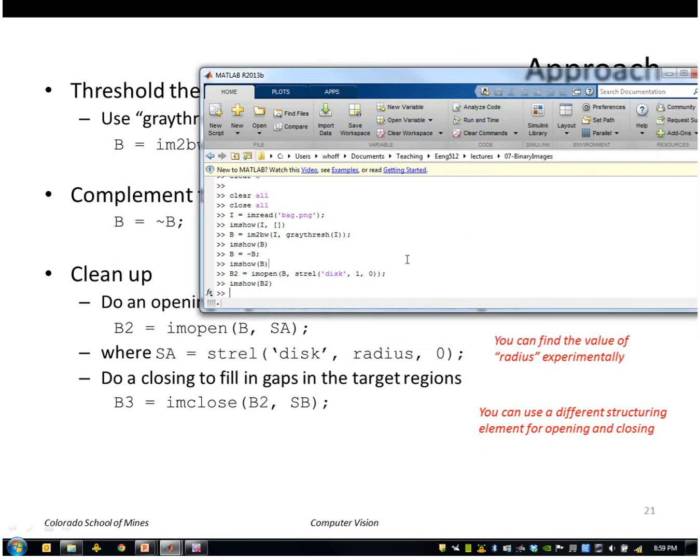But I still have those gaps. So I want to close that using a closing. So I'll apply that to the result that I got before. And I've tried this before as well. I know that a disk of radius two works pretty well there.